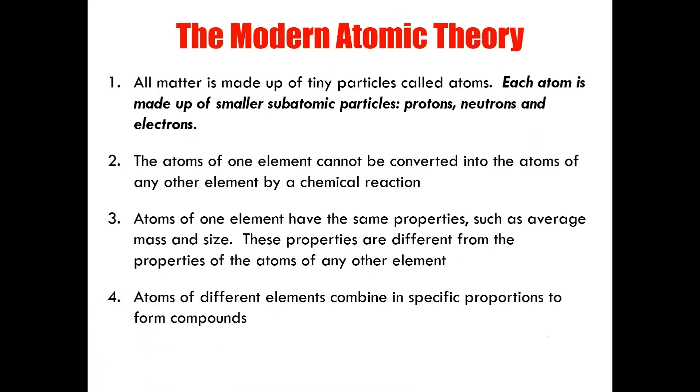And so, we've come full circle with a more modernized version of John Dalton's atomic theory of matter. The only change that's been made is to his first postulate. All matter is made up of tiny particles called atoms. And now we know that each atom is made up of smaller subatomic particles called protons, neutrons, and electrons. And with this slide, I conclude this lecture. I hope you understood everything I discussed in this package. Thank you for listening. All the best.